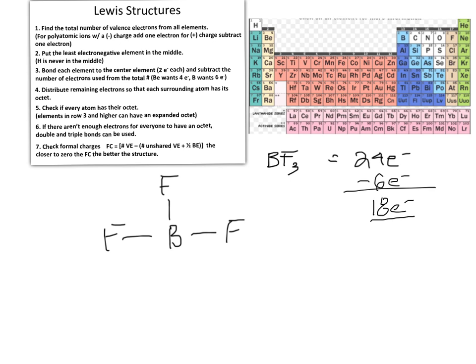We then take these 18 electrons and distribute them to the exterior atoms, using all 18. After subtracting those 18 electrons, we have 0 electrons left over.